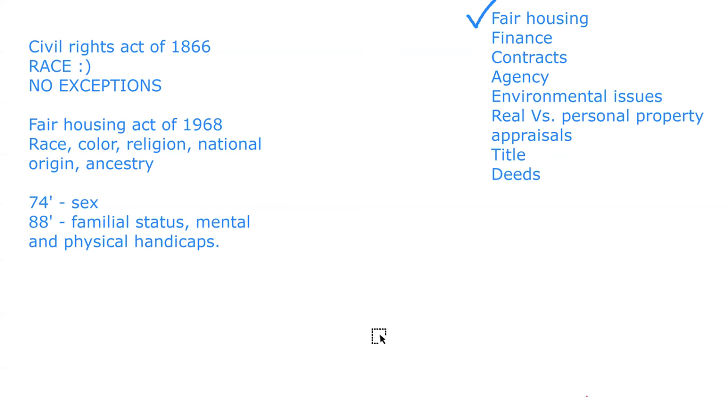What about redlining? Redlining has to do with lending — when you run into a situation where you are not lending or insuring to certain people in certain geographic areas. You're essentially drawing a red line around certain areas. The key is that it's geographic: lending or insuring to certain people in certain geographic areas.